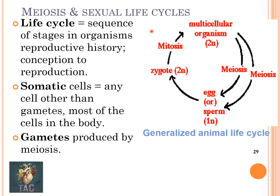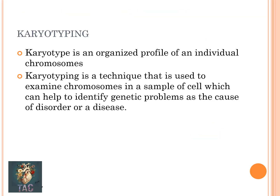The life cycle is the sequence of stages in an organism's reproductive history from conception to reproduction. Somatic cells are any cells other than the gametes; most cells in the body are somatic cells. Gametes are produced by meiosis.